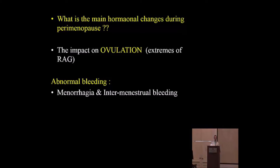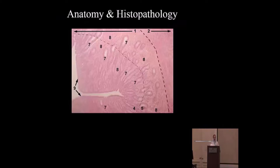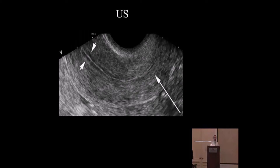Menorrhagia requires an objective measure — excessive vaginal bleeding more than 80 cc per month. Intermenstrual bleeding is any bleeding after cessation of the period and must be taken seriously. We need to understand the endometrial lining: the functionalis layer sheds each month, while the basalis layer remains. On ultrasound we assess the endometrial stripe and thickening, including the junctional zone.